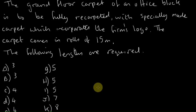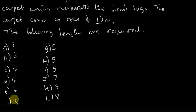Hello and welcome back, we're going to do another bin packing question. So we've got this question, let's just read it out because some of my handwriting is not too good. The ground floor carpet of an office block is to be fully recarpeted with specially made carpet which incorporates the firm's logo. The carpet comes in rolls of 15 meters. The following lengths are required.